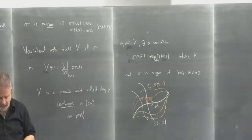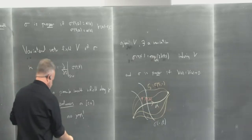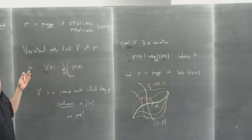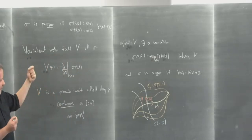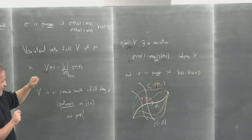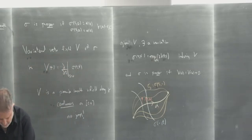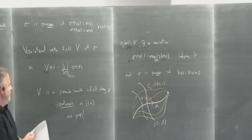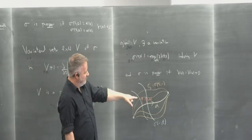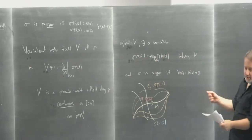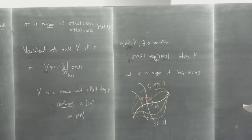The goal today is to look at the first and second variation formulas for the energy functional. Given a variation of a curve, we get the length of each sigma S in that family — that's a function of S — or we can get the energy, also a function of S. The derivative of that function gives the first variation formula, and the second derivative gives the second variation formula. The first part characterizes geodesics as critical points of the energy functional.